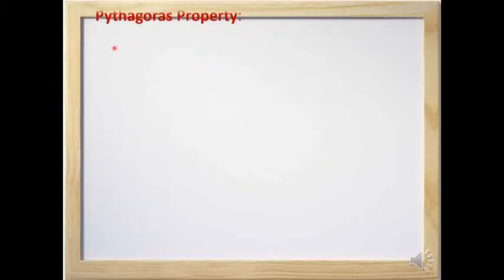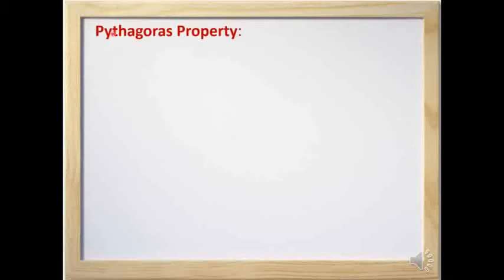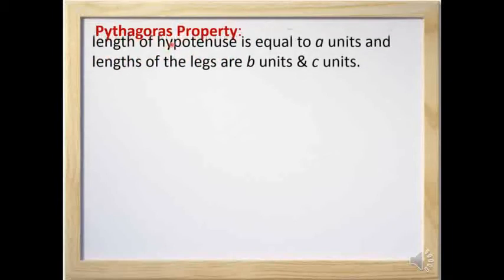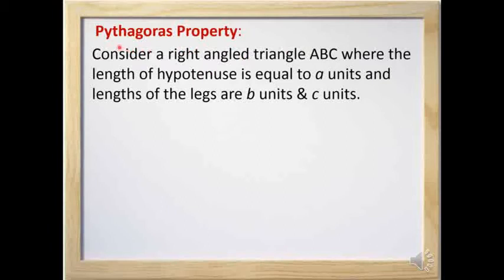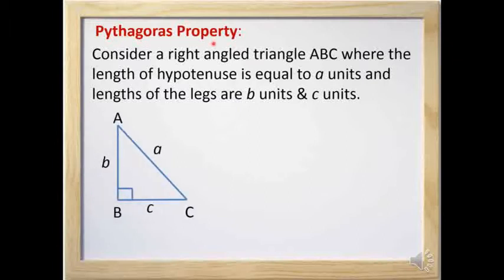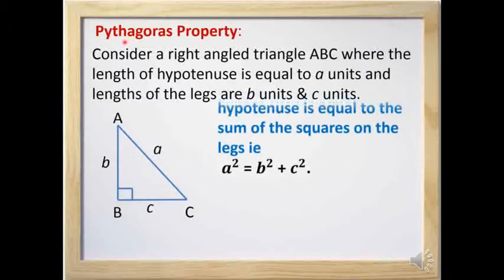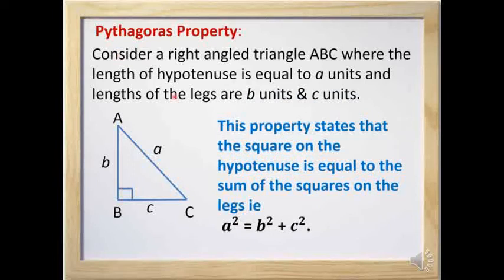Today we are going to learn a very important and useful property of a triangle called the Pythagoras property. This property was found by a Greek philosopher in the sixth century BC, so this property is named after him. This property states that the square on the hypotenuse is equal to the sum of the squares on the legs.